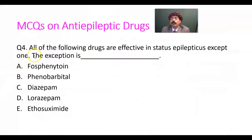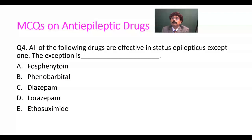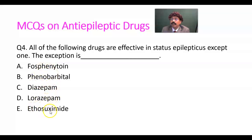Number four: all of the following drugs are effective in status epilepticus, except one. The exception is what? Fosphenytoin, phenobarbital, diazepam, lorazepam, ethosuximide. The answer should be ethosuximide — that is the exception. All the others are useful; ethosuximide is not effective for status epilepticus.